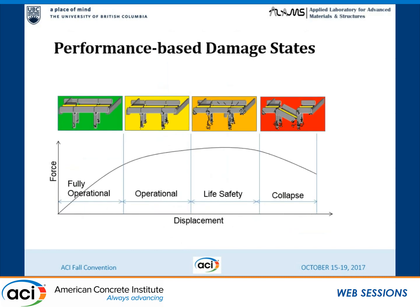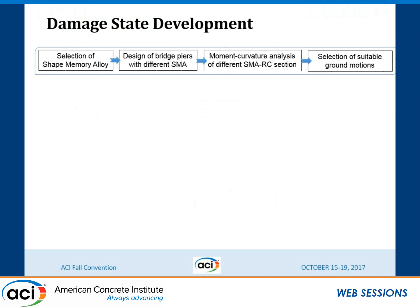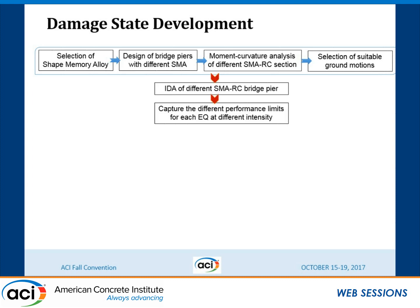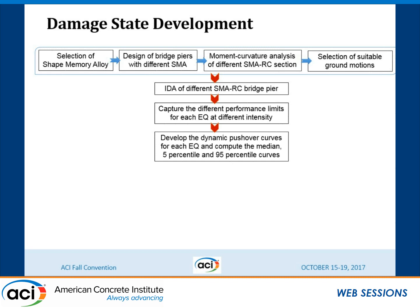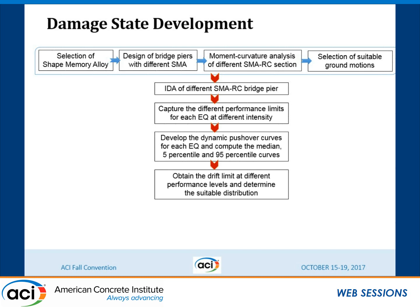While defining performance objectives, we must define some damage states. We can follow different frameworks from the literature — for example, fully operational, operational, life safety, and collapse. In a step-by-step procedure, we select the alloy type, design the bridge pier, find the moment-curvature and pushover response to determine capacity, select ground motions, perform incremental dynamic analysis (IDA), capture performance limits at different intensity levels, develop the dynamic pushover response, obtain drift limits at different performance levels, and define those drift limits as damage states.